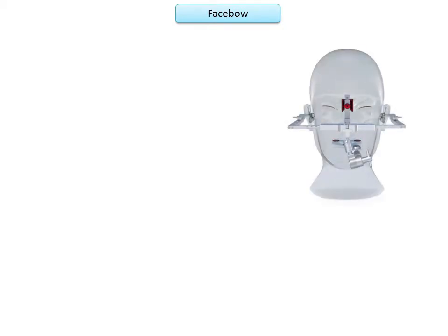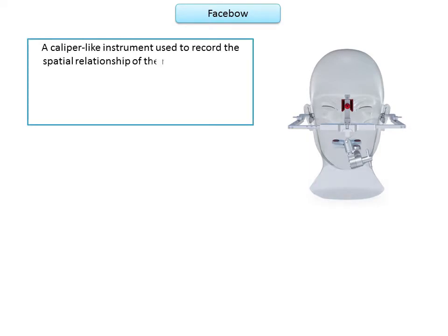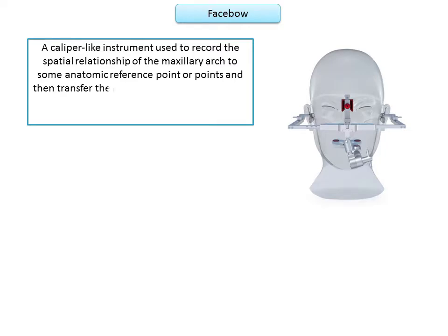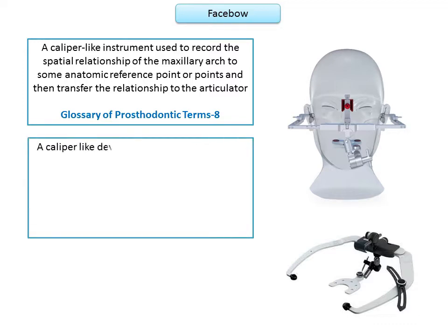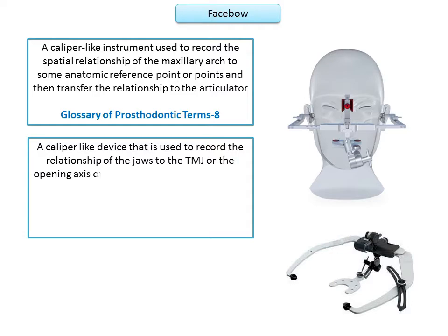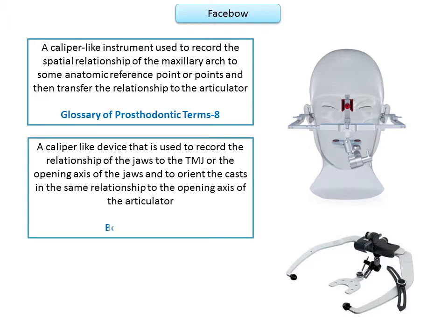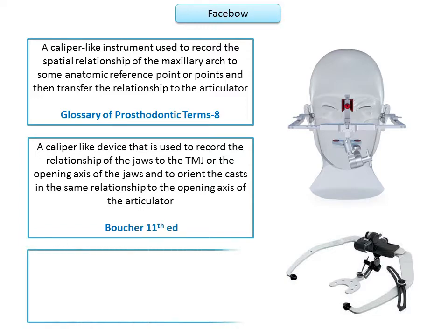This recording is done using a face bow. Multiple definitions exist for face bow. According to the Glossary of Prosthodontic Terms, a face bow is a caliper-like instrument used to record the spatial relationship of the maxillary arch to some anatomic reference point or points, and then transfer that relationship to the articulator. According to Boucher's 11th edition, it is a caliper-like device used to record the relationship of the jaws to the temporomandibular joint or the opening axis of the jaws, and to orient the cast in the same relationship to the opening axis of the articulator. According to Hartwell in 1992, a face bow is a caliper-like device used to record the relationship of the maxilla to the temporomandibular joint.